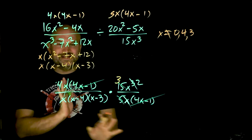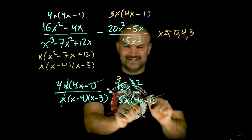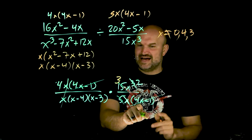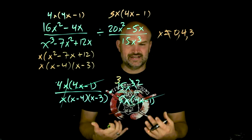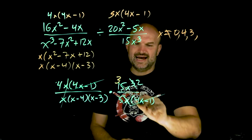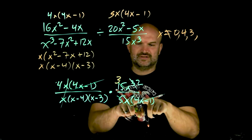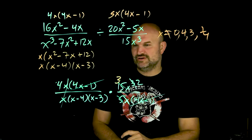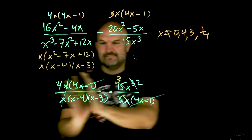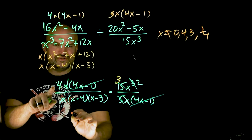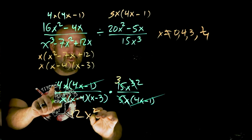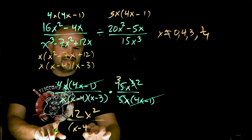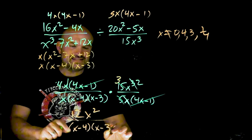Multiplying straight across gives a final answer of 12x squared in the numerator and (x minus 4) times (x minus 3) in the denominator, with excluded values x ≠ 0, 3, 4, and 1/4.